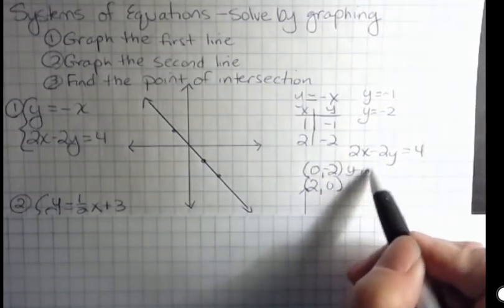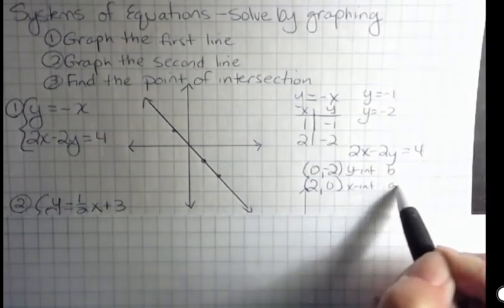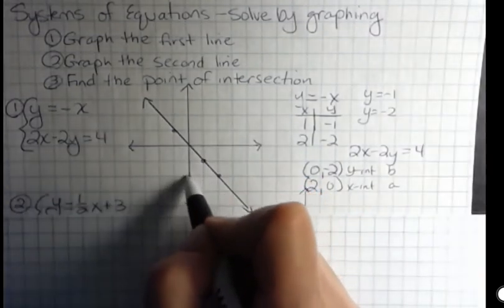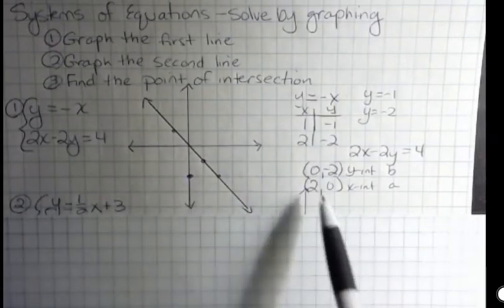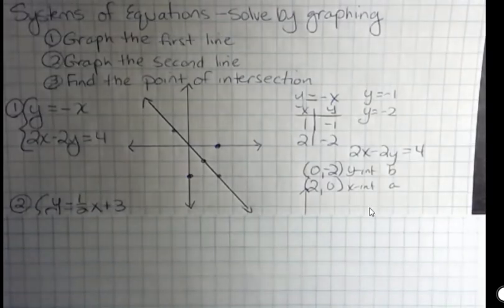So there's my two intercepts. This is my y intercept, which I can abbreviate with b. And this is my x intercept, which I could abbreviate with a. So I have 0, negative 2, and I have 2, 0. And now I'm going to connect those two points.